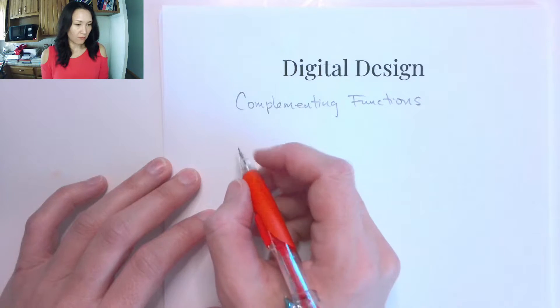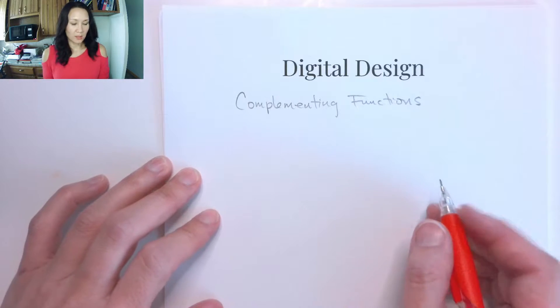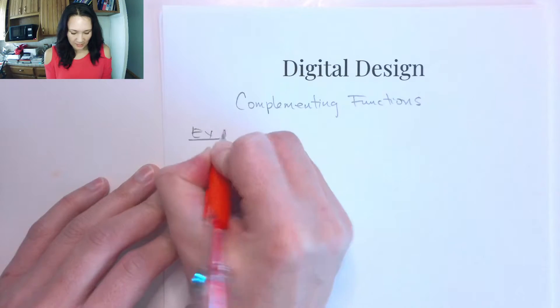So if we are given a function, we can complement the entire function using De Morgan's theorem. Let me show you an example of what I mean.